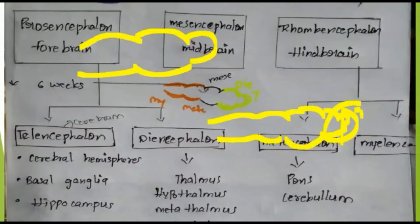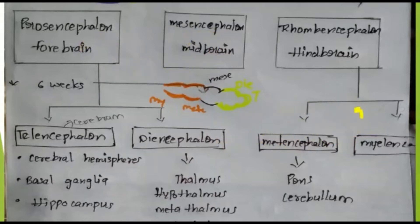The brain is divided into forebrain, midbrain, and hindbrain. The forebrain is otherwise known as prosencephalon, the midbrain as mesencephalon, and the hindbrain as rhombencephalon. The forebrain is further divided into telencephalon and diencephalon, and the rhombencephalon is divided into metencephalon and myelencephalon.